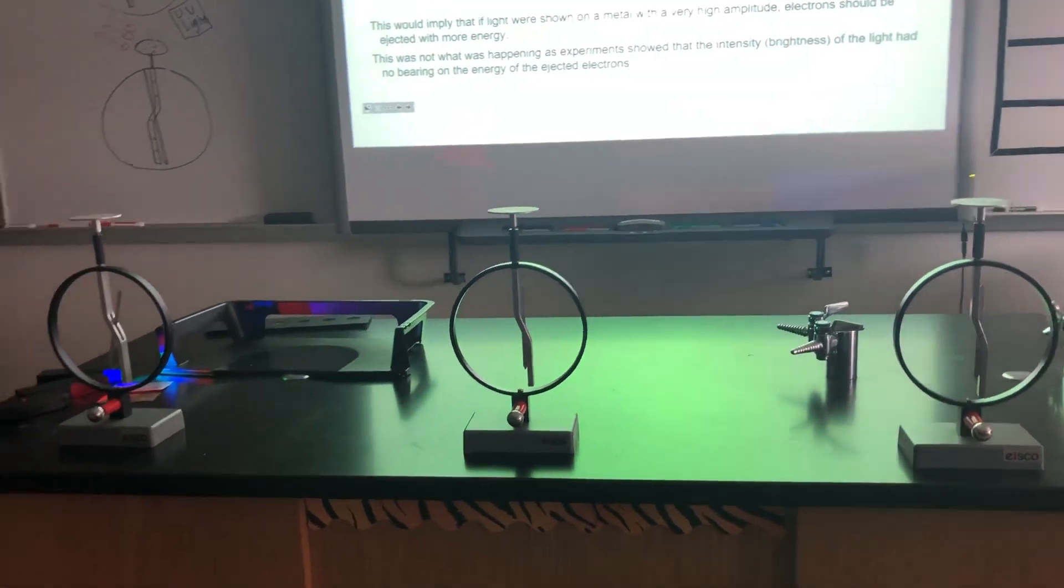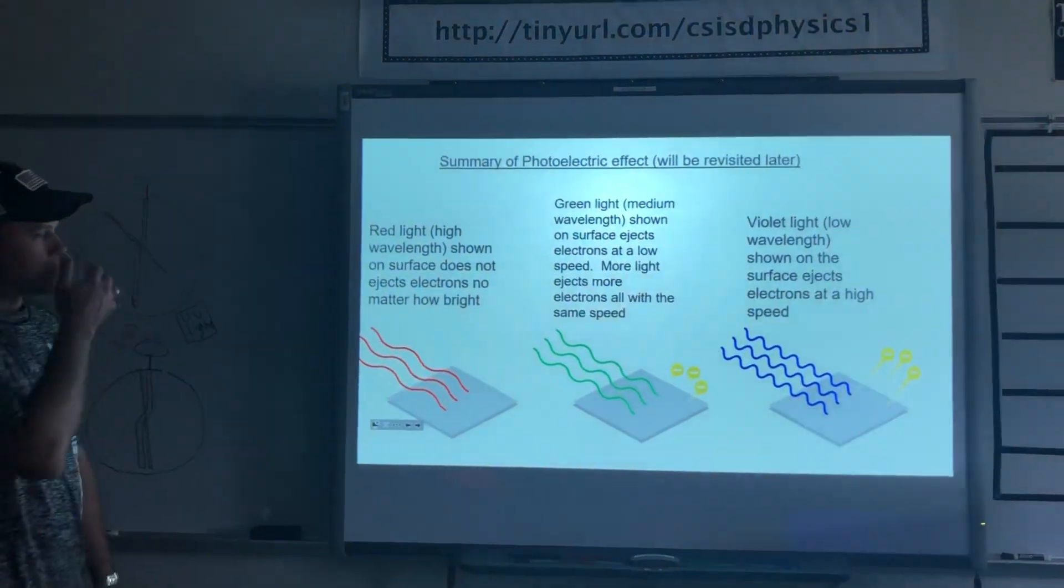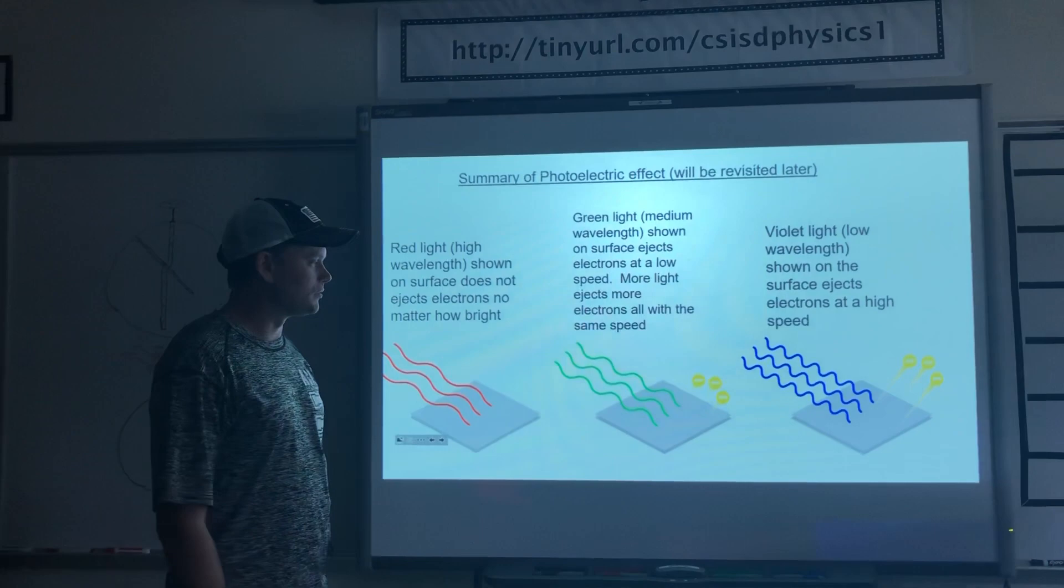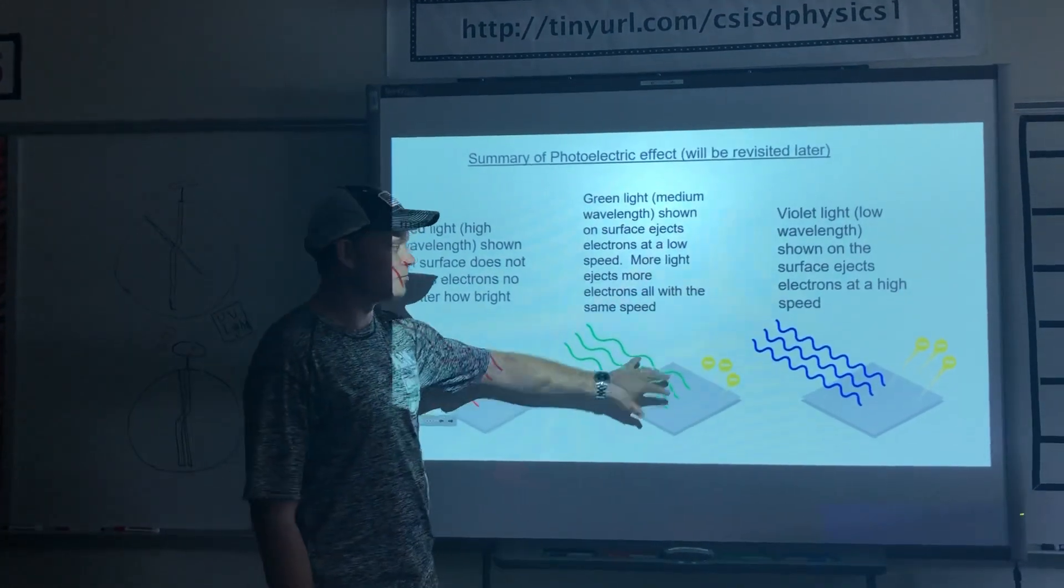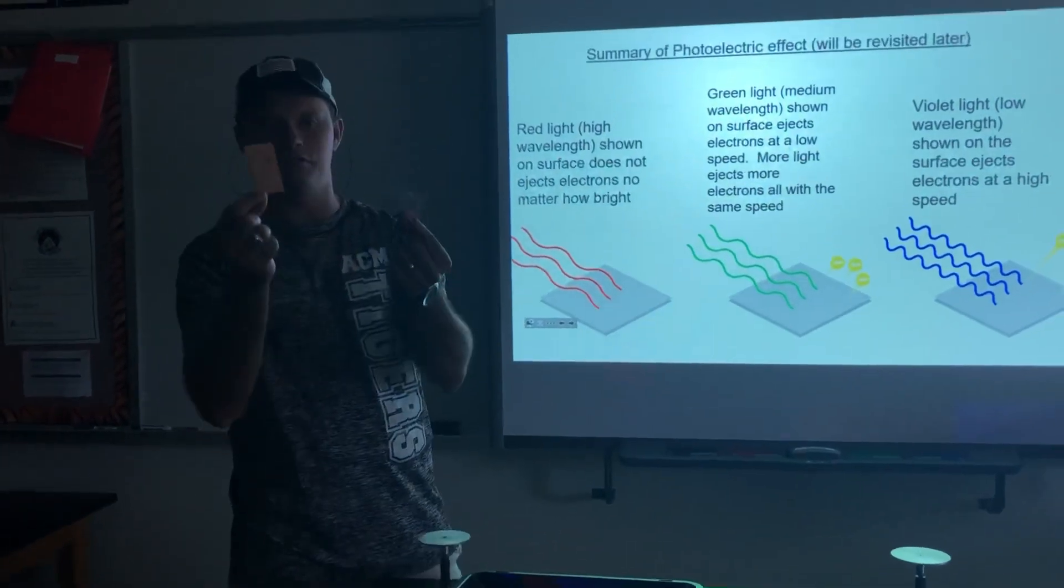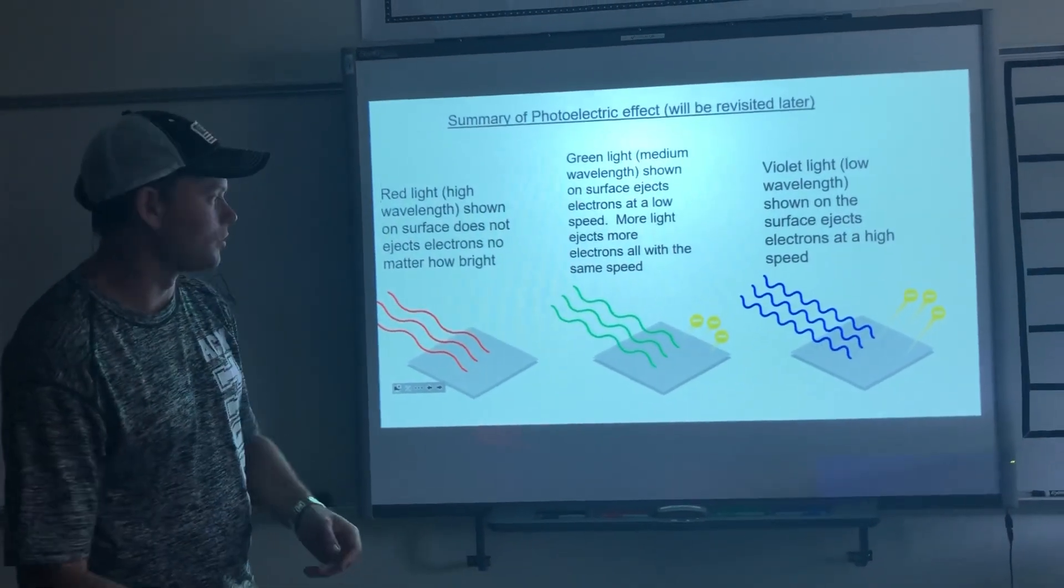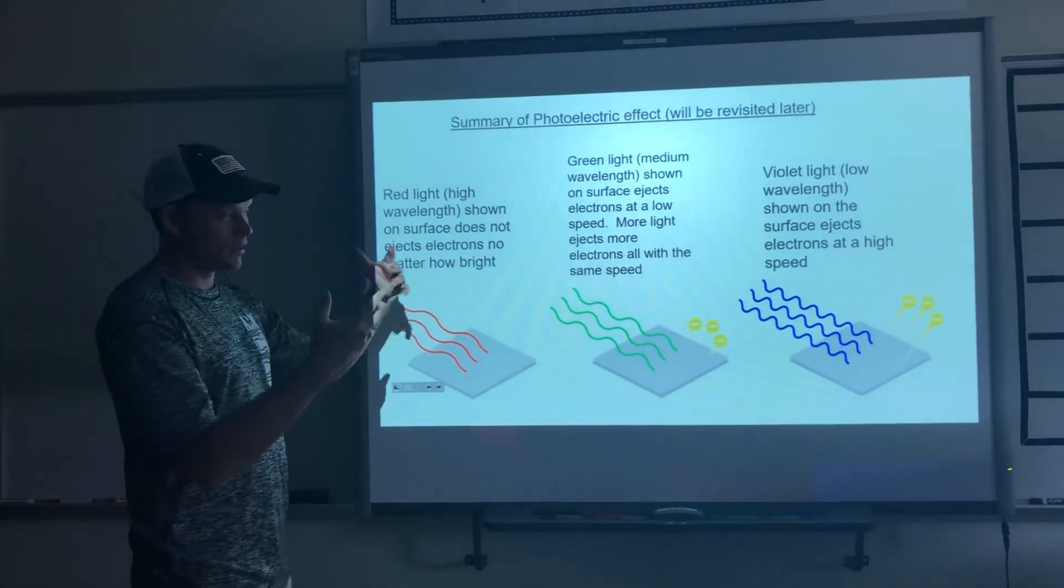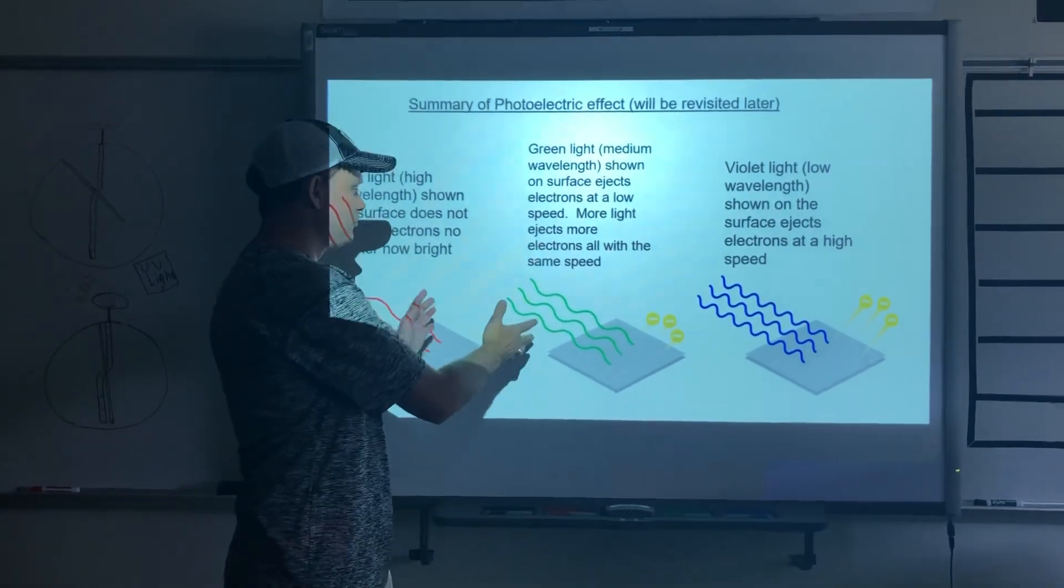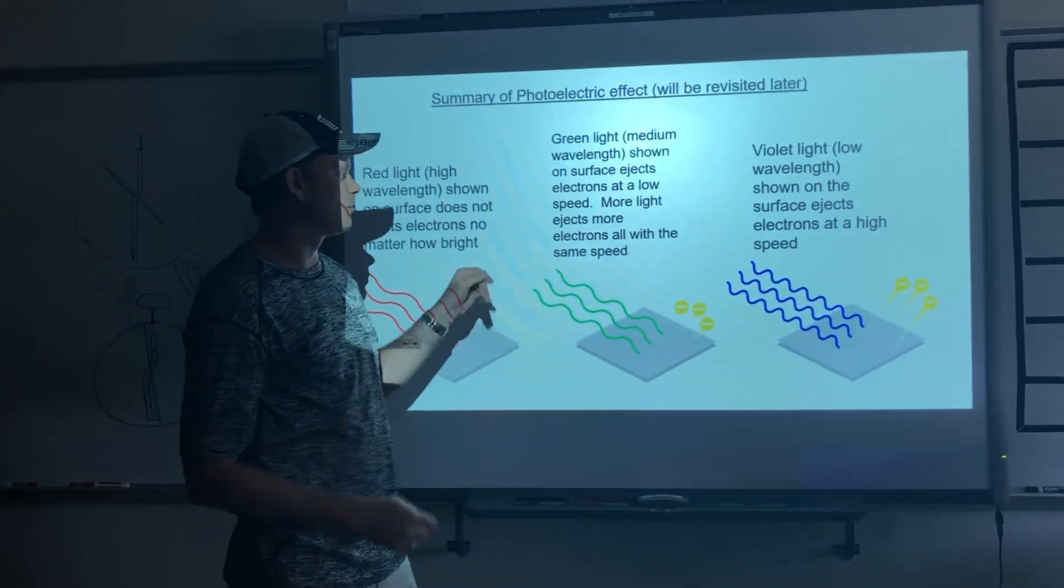Now what is actually happening? Well, shine red light on certain surfaces and you get no ejection of electrons. Shine green light, sometimes you would, depends on the surface. If I use copper or zinc, there's different surfaces you could put to make them eject better or worse. So green light, higher frequency, was proving that the amplitude was not the contributing factor of the energy of the light; it was the frequency.